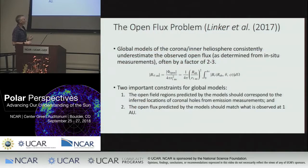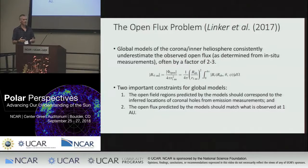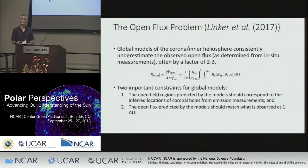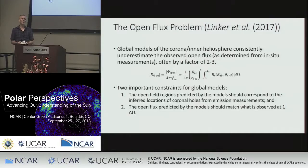The open flux problem really is a way of capturing this deficiency in our model — we can't predict a basic strength of the interplanetary magnetic field, and it's hampered us for a long time. But we thought maybe there's a practical way of fixing it. You could multiply the magnetograms by some constant factor. The problem is if that's not the right thing to do, if the magnetograms really are that lower value, then you're changing the physics because you're changing the proportion of the various pressure terms, and that's going to change the structure you predict in the solar wind.